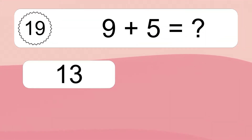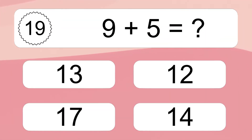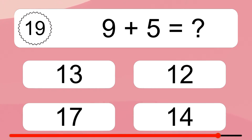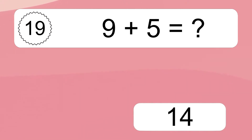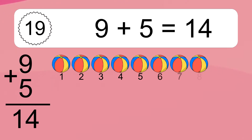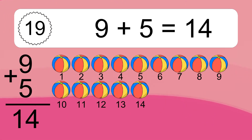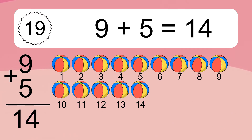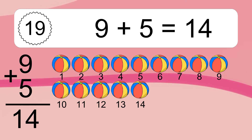9 plus 5 equals what? 9 plus 5 equals 14. Let's count it. 1, 2, 3, 4, 5, 6, 7, 8, 9, 10, 11, 12, 13, 14.